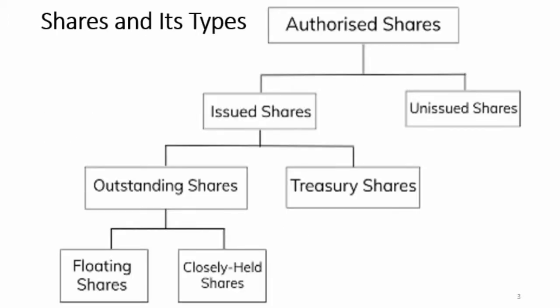Here is a flowchart I have made for your understanding. When we study share classification, and we have studied the balance sheet in types of financial statements — on the liability side, in the stockholder equity portion — we can see that there are different types of names like authorized shares, issued shares, and outstanding shares.